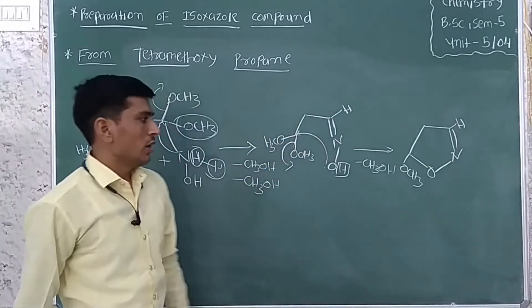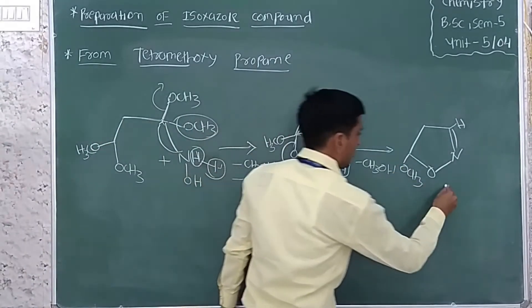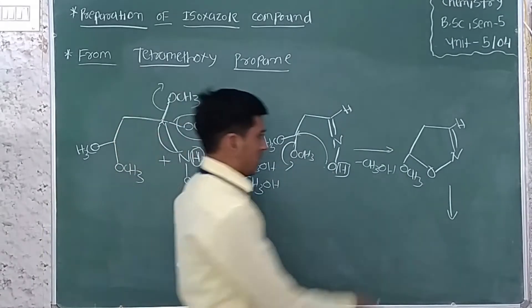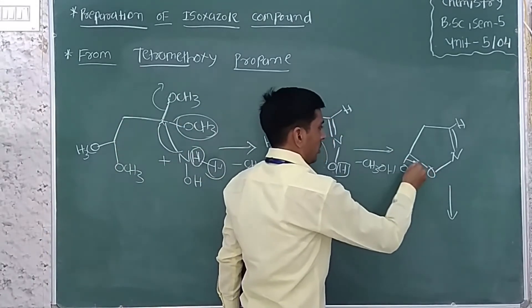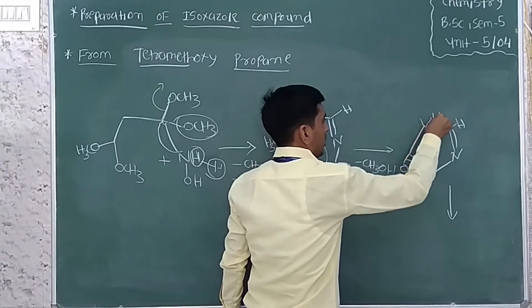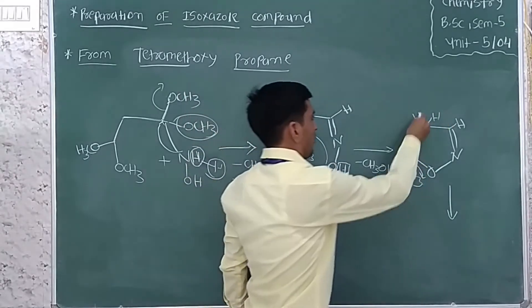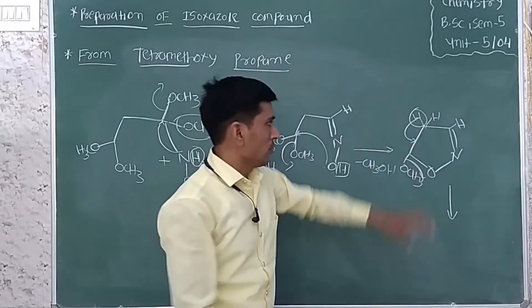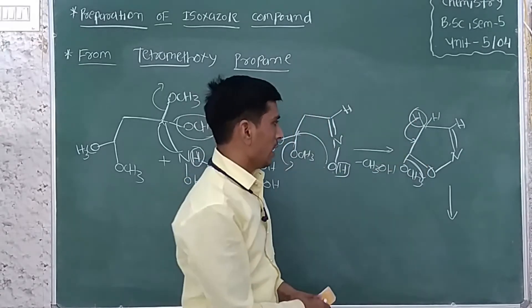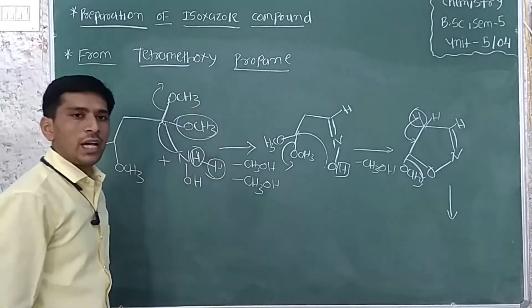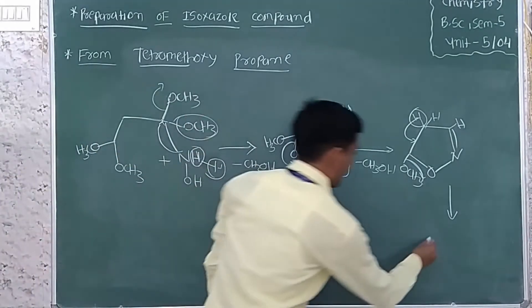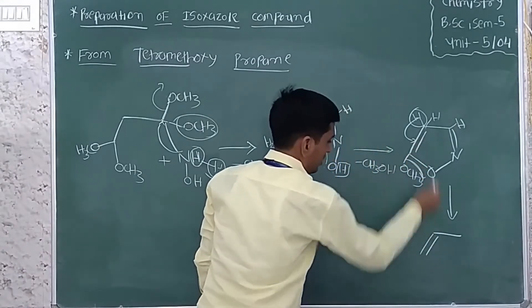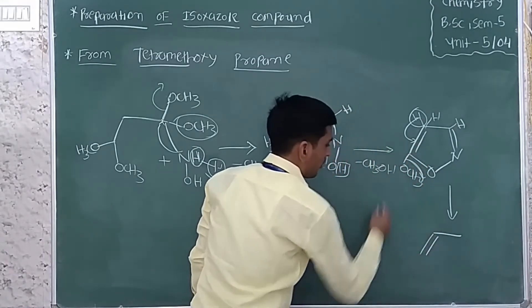The last methoxy group is removed from this carbon atom, which contains two hydrogen atoms. One hydrogen and this methoxy group leave, forming a carbon-carbon double bond and preparation of the isoxazole compound. Carbon-carbon double bond formation and removal of the methoxy group complete the synthesis.